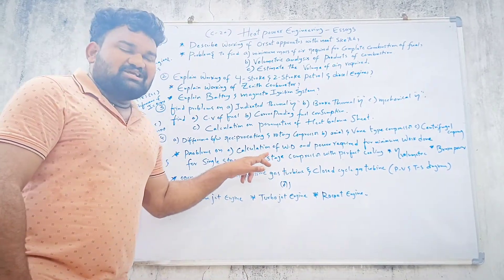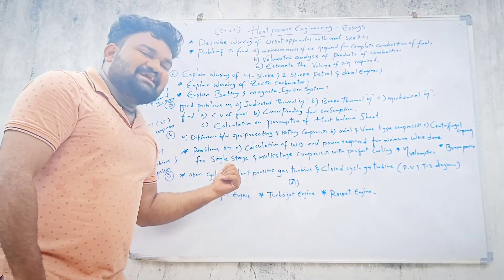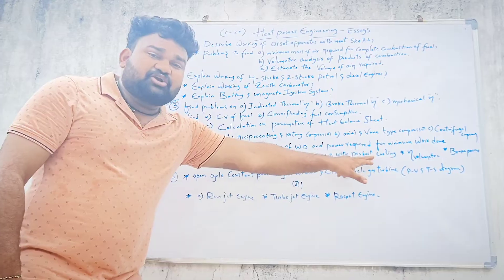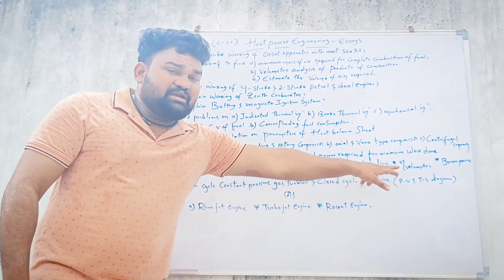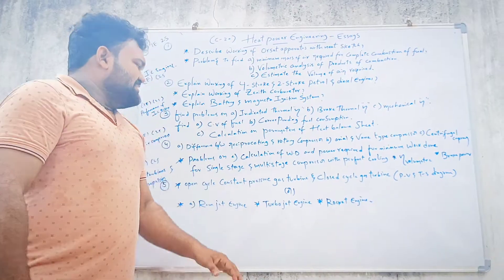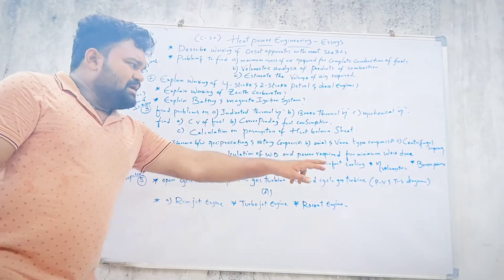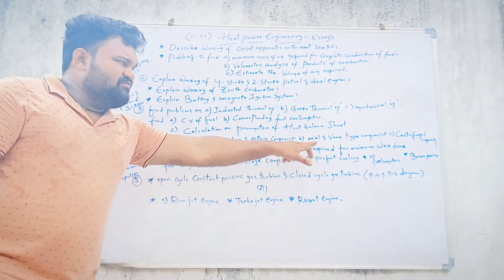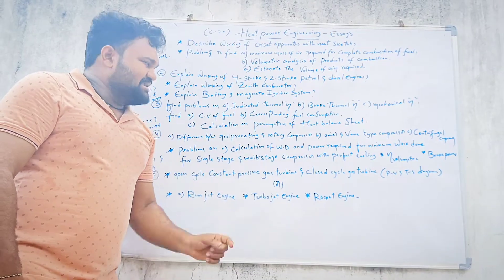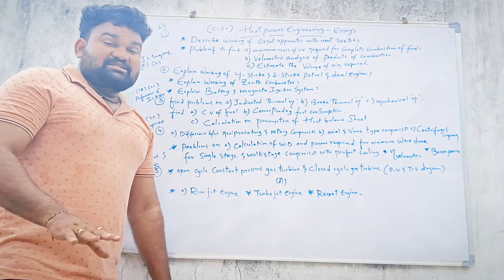Problems cover calculation of work done and power required — minimum work done for single-stage compressor or multi-stage compressor with perfect cooling. Also find volumetric efficiency and brake power. In theory, the difference between reciprocating compressor, rotary compressor, axial vane type compressor, and centrifugal compressor is important, along with their working principles and diagrams.